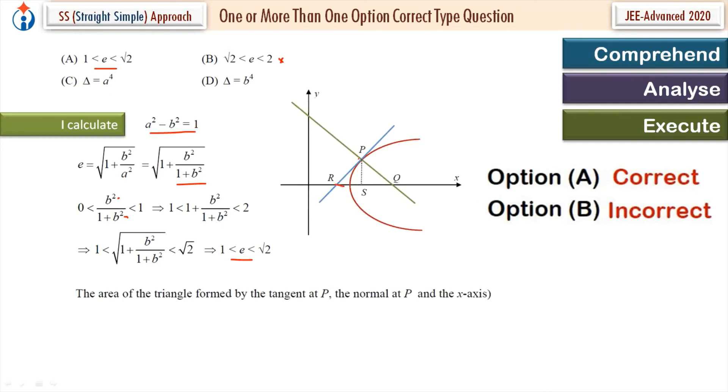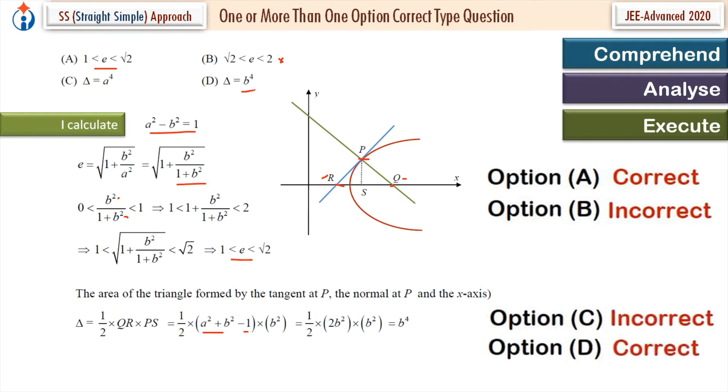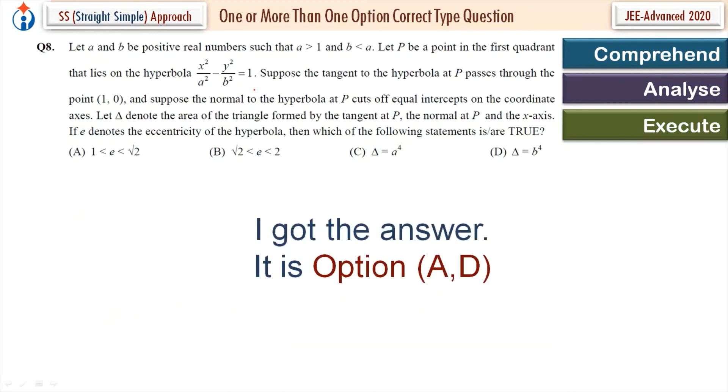Now look at the area of the required triangle. So triangle P, Q, R. Area of the triangle is half into base into height. Half into QR into PS. QR is x-coordinate of Q minus x-coordinate of R. And PS is y-coordinate of point P, ordinate. We put the value. We use this result. We get b to power 4. So option D is correct. Option C is incorrect. I got my answer. It is option A and D.